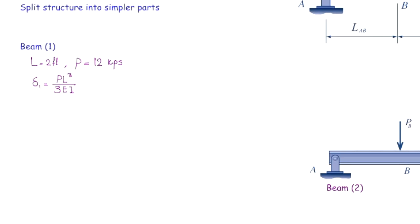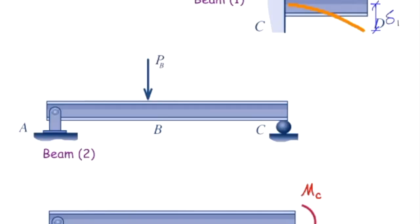P is the external force acting at that point, which is 12 kips. Plugging in the values, we get delta one equals 0.0145 feet, going downward. Beam number two is the beam subjected to external load acting at B.